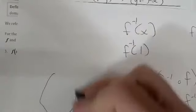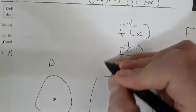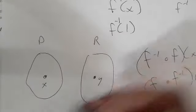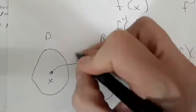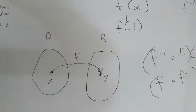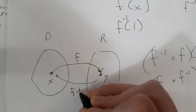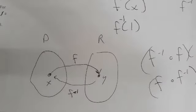Maybe a little picture will help. We have our domain and our range — an X over here and a Y value over here. What's happening is my F takes my X and maps it to this Y value. When I apply F-inverse, it takes me back to my X.